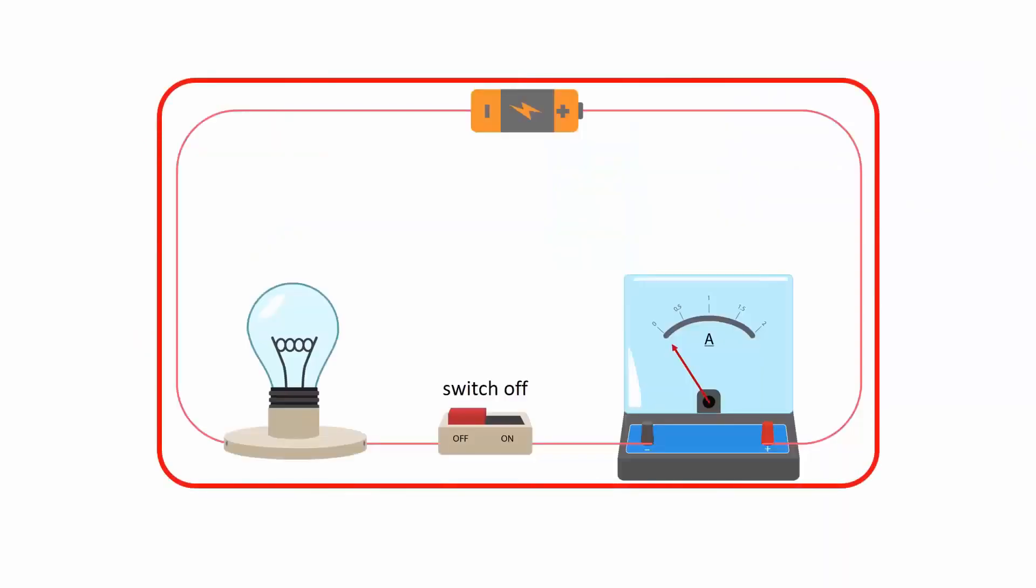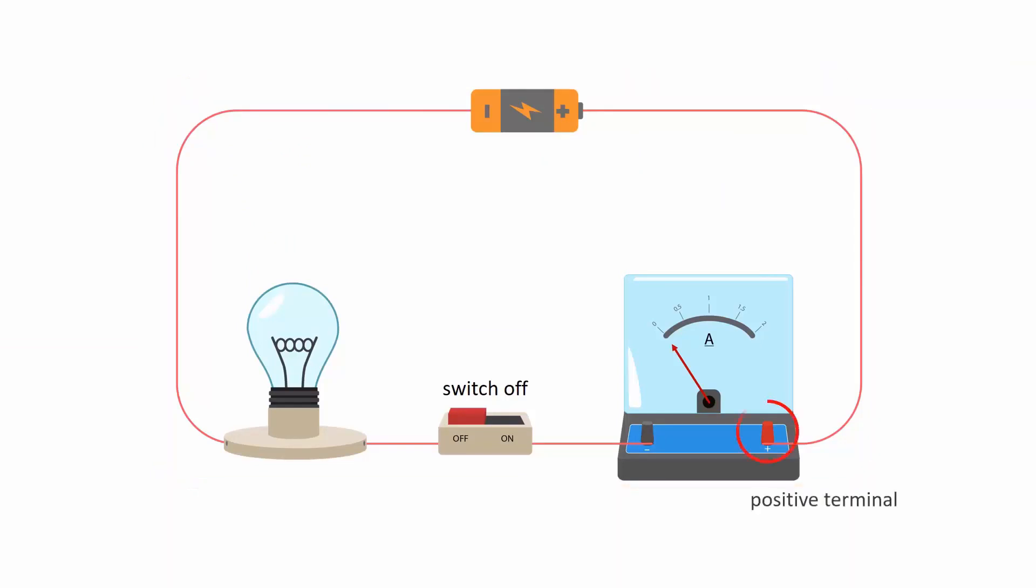An ammeter is connected in series in a circuit. Its positive terminal, colored as red, is connected to the positive terminal of the source, which is a cell here. The negative terminal, colored as black, is connected to the negative terminal of the cell.